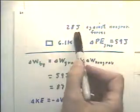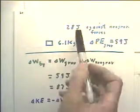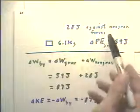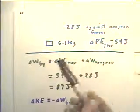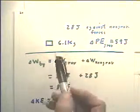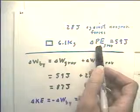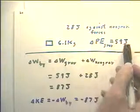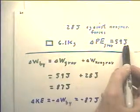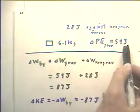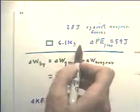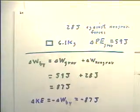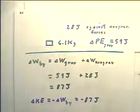If 28 joules of work are done against the non-gravitational forces, while the change in gravitational potential energy is 59 joules, and all this applies to a 6.1 kilogram object, then the question is: what's the change in the kinetic energy?